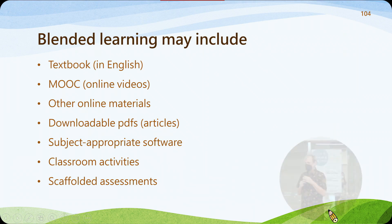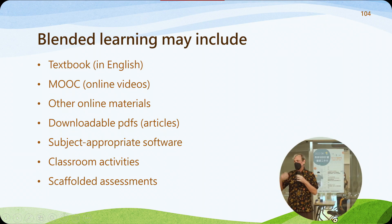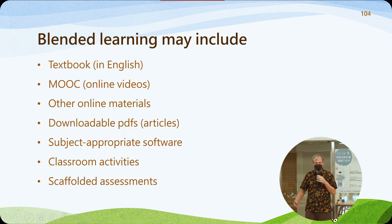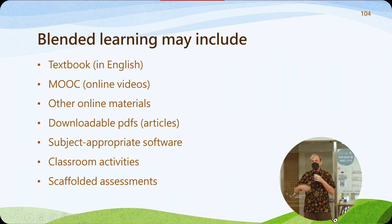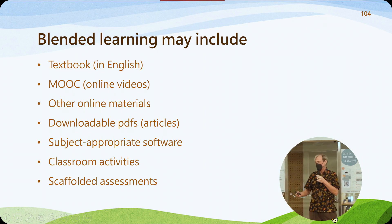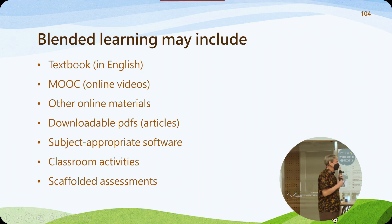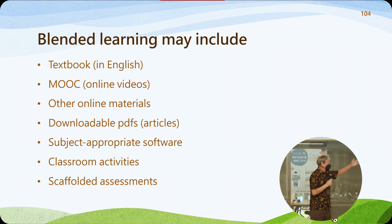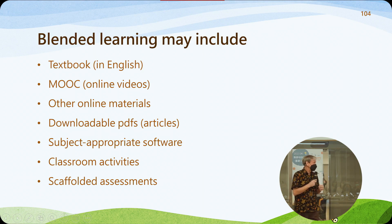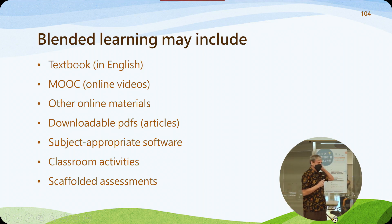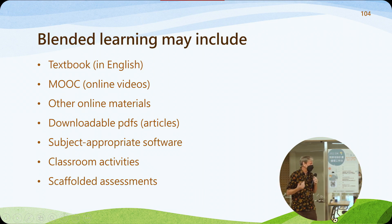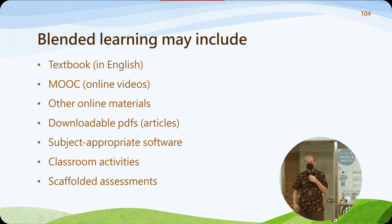Blended learning includes a textbook — and if it's an EMI course it should be in English, because that's where they learn the vocabulary, and they can read it ahead and come prepared. You may also include MOOCs, online videos, other online materials, PowerPoints, PDFs, software, classroom activities, and assignments. All of these are part of the learning experience.